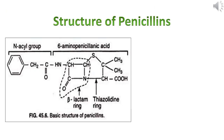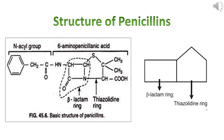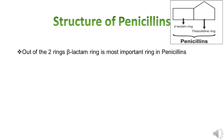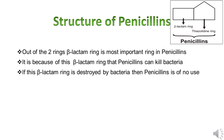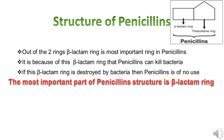This is the structure of penicillins. There is a four-membered ring called the beta-lactam ring. Attached to this beta-lactam ring is a five-membered ring known as the thiazolidine ring. When the beta-lactam ring is attached to the thiazolidine ring, this forms the antibiotic penicillin. The beta-lactam ring is the most important ring in penicillins — it is because of this ring that penicillins can kill bacteria. If this beta-lactam ring is destroyed by bacteria, then penicillin is of no use.